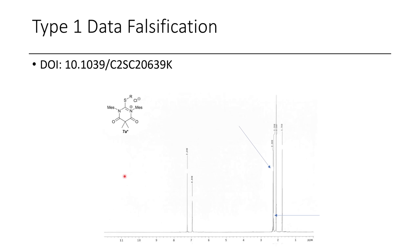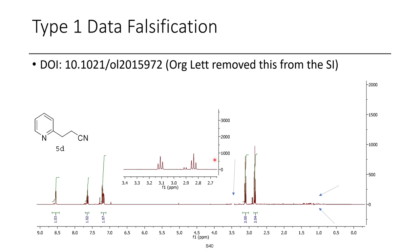Here's an example of Type 1 data falsification where impurities were covered with a white box. You can see a white box is blocking part of this peak — you don't just have peaks start and stop; that's weird. Another example shows a peak that's just cut, which is strange. In the next one, you can see spots where the spectrum is just gone — you never have a discontinuous baseline in an NMR spectrum, so this is suspicious. And over here, we have a flat baseline with peaks on top of it, where part of the peaks are cut off. Discontinuous. Extremely concerning. Super obvious.